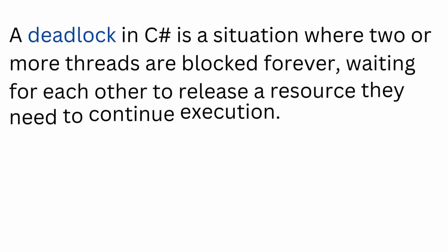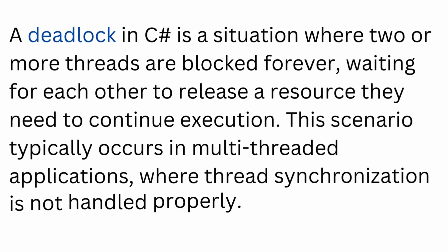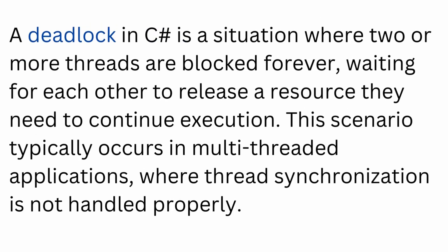A deadlock in C# is a situation where two or more threads are blocked forever, waiting for each other to release a resource they need to continue execution. If you ever want to build a solid, robust, multi-threaded application in C#, you need to understand deadlocks and how to prevent them.